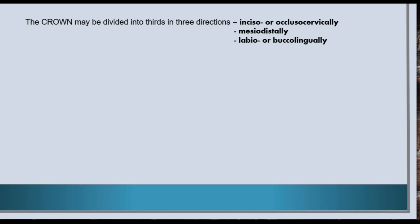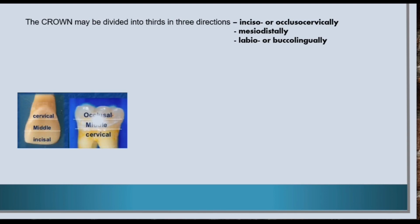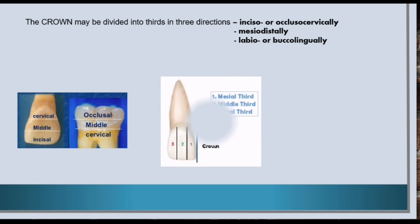The crown may be divided into thirds in three directions: inciso- or occlusocervically, mesiodistally, and labio- or buccolingually.